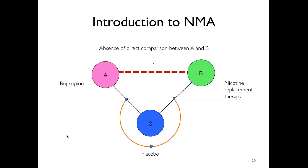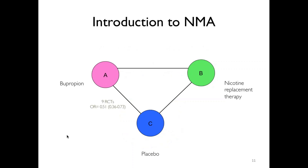In this particular example, let's say that our search strategy retrieved nine RCTs for the comparison of nicotine replacement therapy versus placebo. You can also see the relative effect estimates and their magnitude for both direct comparisons. Through the application of proper statistical methods, we are able to calculate the relative effect estimate and its magnitude for the indirect comparison: bupropion versus nicotine replacement therapy.